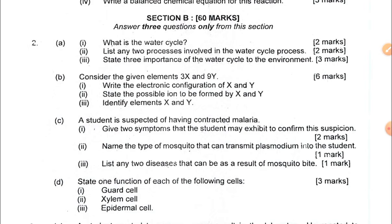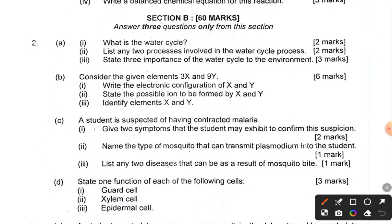For question 2b, you are given element 3X and element 9Y. Write the electron configuration for X and Y. X has atomic number 3 and Y has atomic number 9. You also need to identify the possible ion and identify what elements X and Y are.